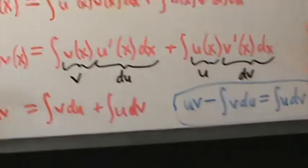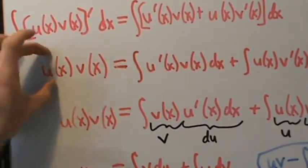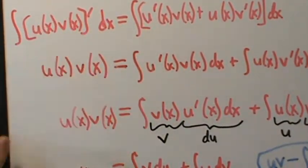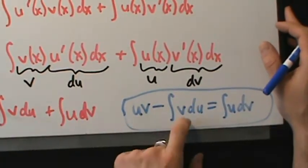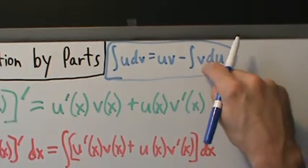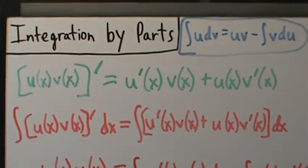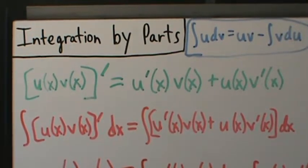We didn't write a plus c when we integrated because there's also a plus c in the other integral — so we just have a plus c from the formula anyway. That's where the integration by parts formula comes from. In the next video, we're going to talk about how to use it and also go through an example.